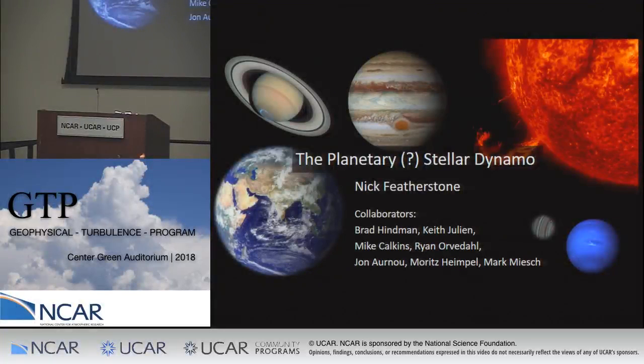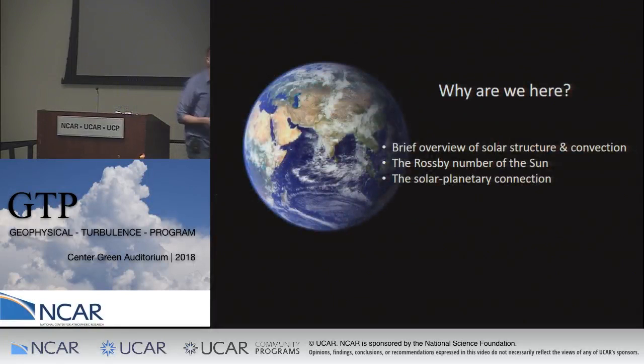Nick Featherstone introduces his talk, noting a connection between stellar and planetary dynamo theory, and that recent solar results suggest solar convection might be somewhat more similar to planetary convection than previously thought. This work draws on collaborations with Brad Hyman, Keith Julian, Mike Calkins, Ryan Orvidal, Sean Arno, Maritz Heimple, and Mark Miesch. He will cover an overview of solar structure and convection, the problem of the Rossby number in the sun, and the solar-planetary connection.